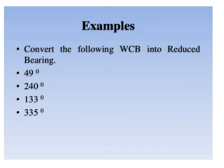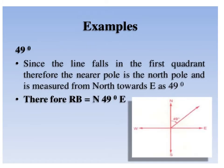We are now solving problems on conversion of WCB into reduced bearing. The values of WCB are 49 degrees, 240 degrees, 133 degrees, and 335 degrees. For the first value, WCB is 49 degrees. Since the line falls in the first quadrant, the nearest pole is north and it is measured from north towards east as 49 degrees. Therefore, the reduced bearing is N 49 degrees east.